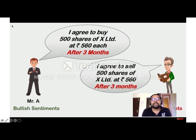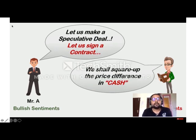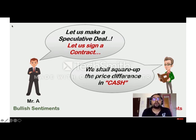Mr. A is having bullish sentiments — he is expecting a price rise in future. Mr. B is having bearish sentiments — he is expecting a price reduction in future. Mr. A, with bullish sentiments, says: 'Let us make a speculative deal, let us sign a contract, and we shall square up the price difference in cash.' So there is no need to exchange physical shares — just the difference in stock price is squared up. Mr. A's shares are quoted at Rs. 560 now, and he expects the price will rise after three months. Mr. B, with bearish sentiments, expects the price will fall after three months.